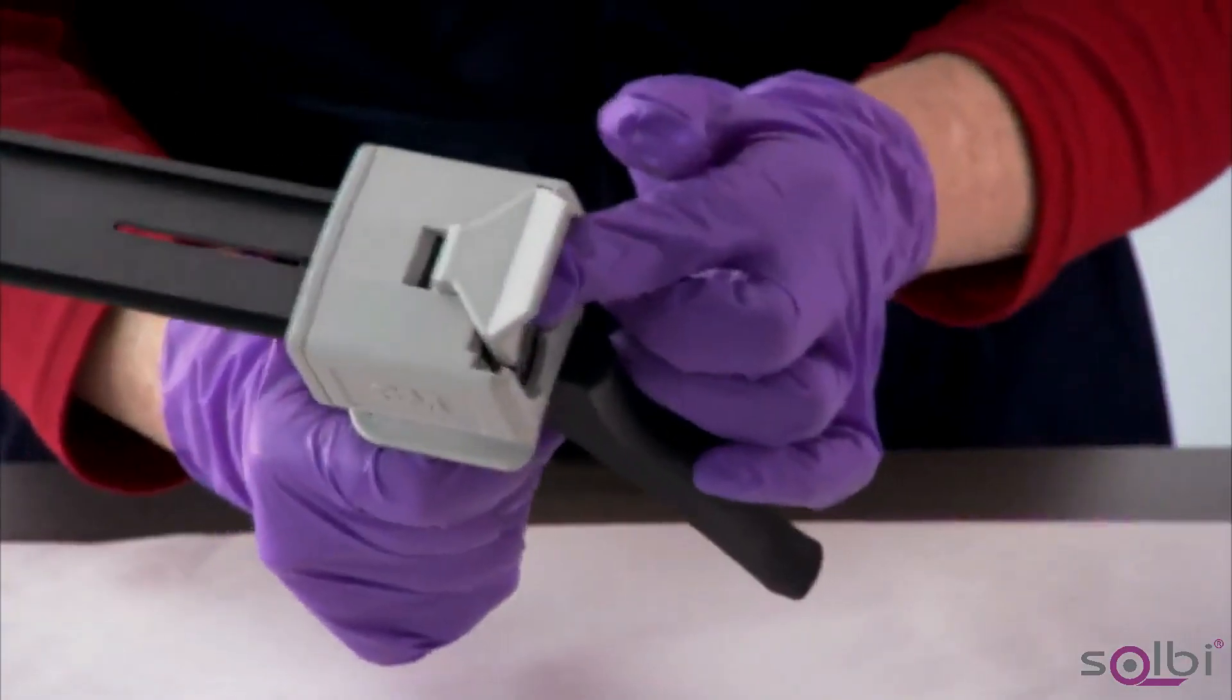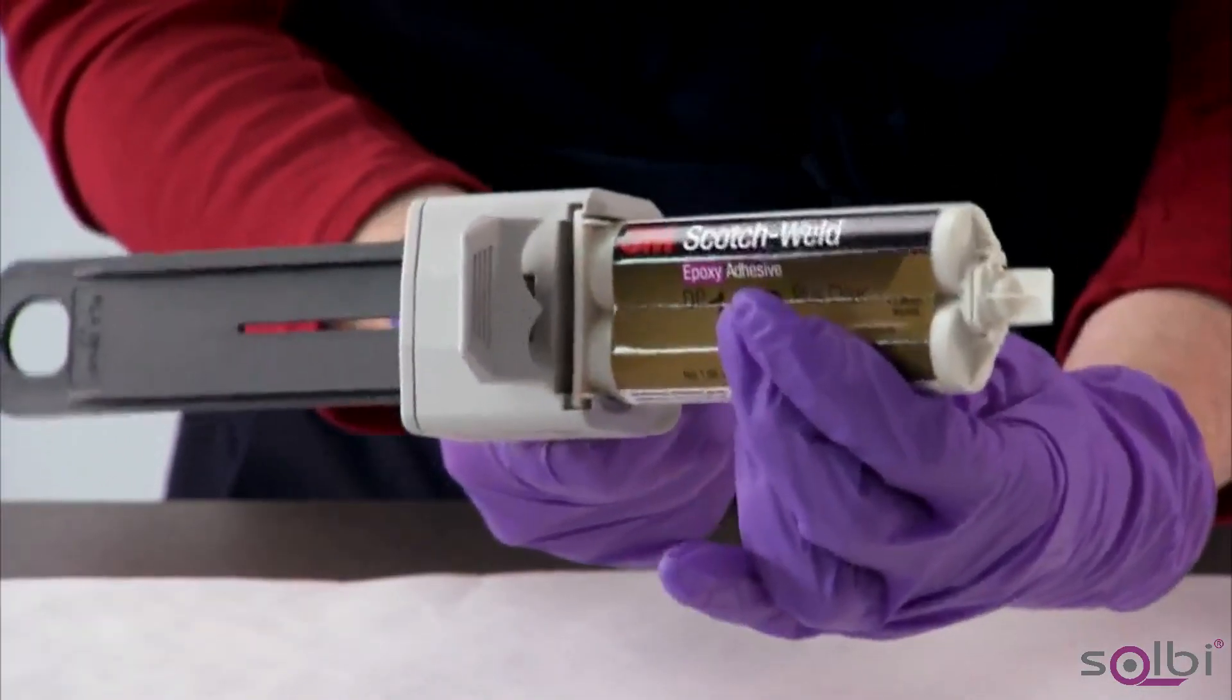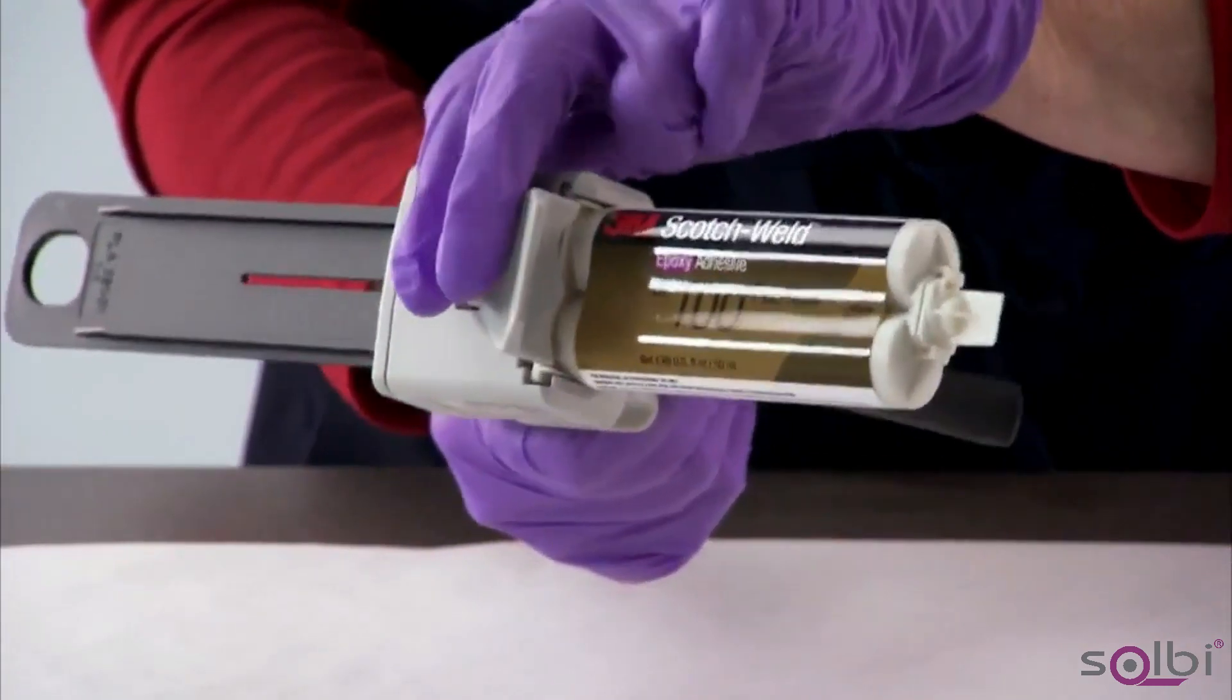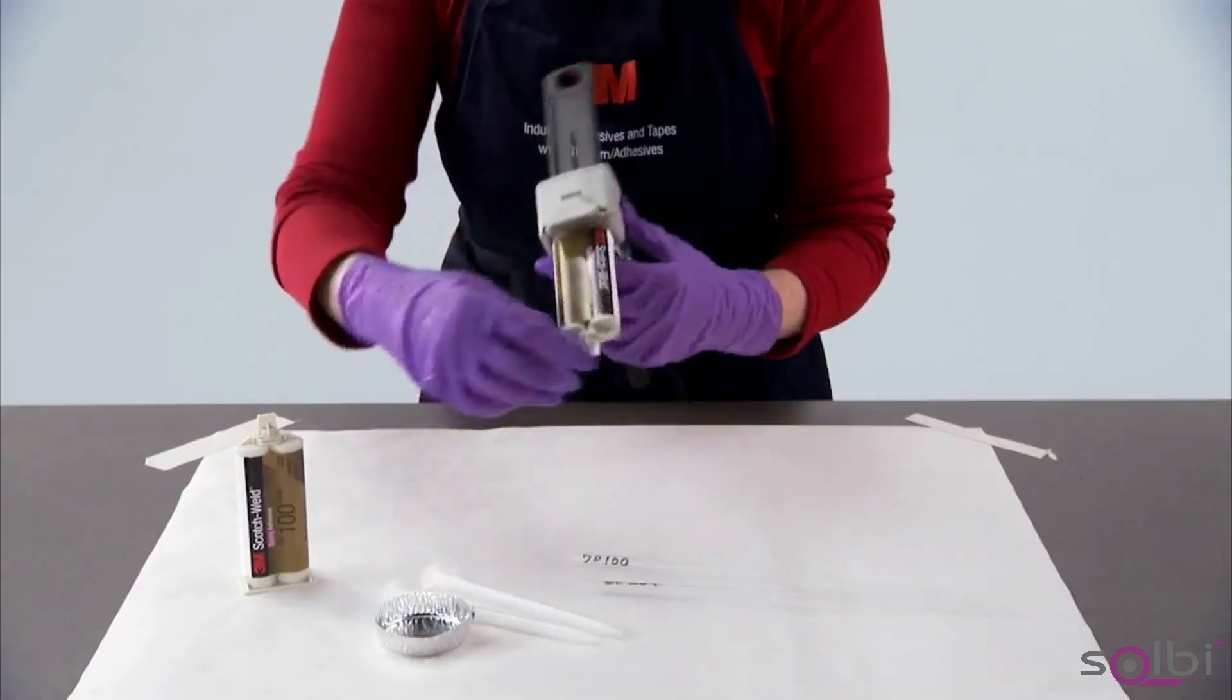Remove the applicator from the box and load the plunger. Insert the DP100 Plus adhesive in the applicator and remove the cap.